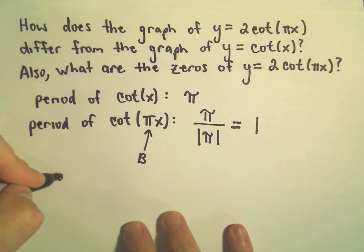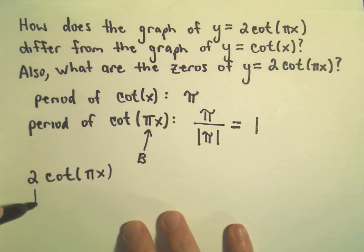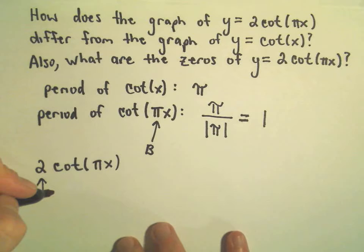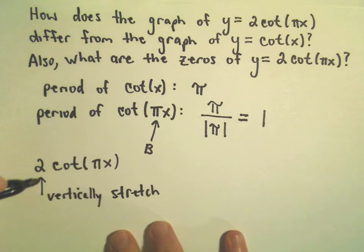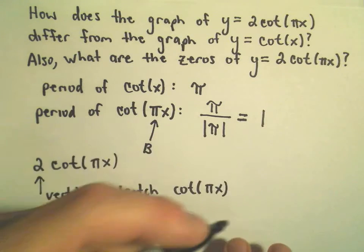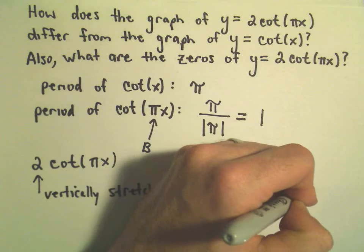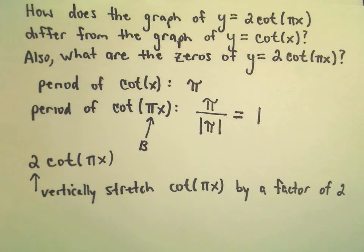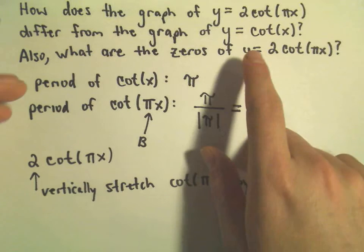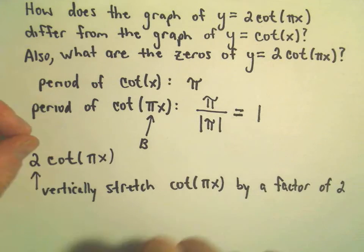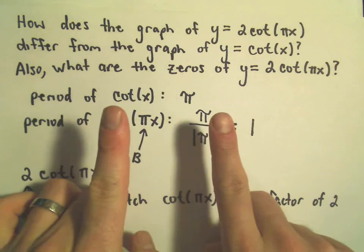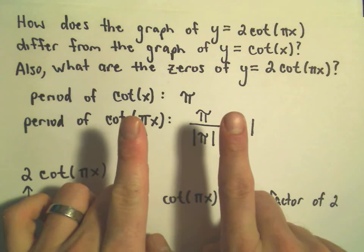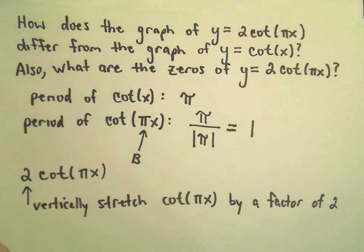What effect does the 2? If we think about 2cot(πx), remember if you multiply out front, all that does is it vertically stretches. So this is going to vertically stretch our cot(πx) graph by a factor of 2. That can be a little hard to see sometimes when you graph these. So those are the big differences. If you multiply cotangent by 2, it's going to stretch it by a factor of 2. Basically, this new graph is going to look like cotangent. The period is going to be pushed in, less than what it was originally. And the 2 out front is going to take the graph and stretch it a little bit vertically. Maybe that will help us figure out the zeros as well.